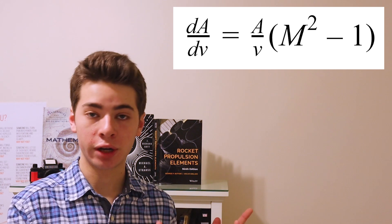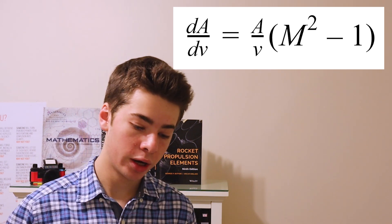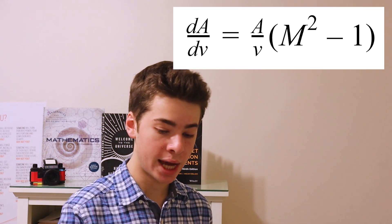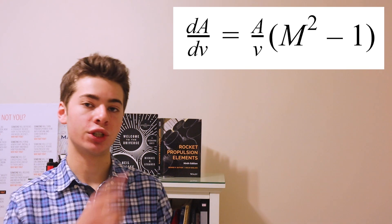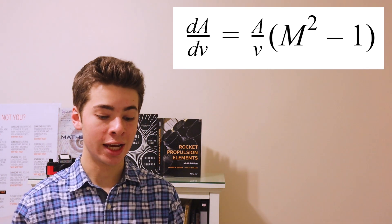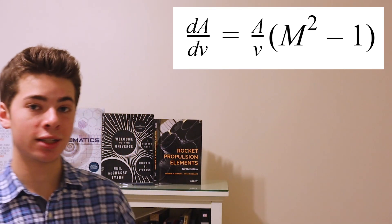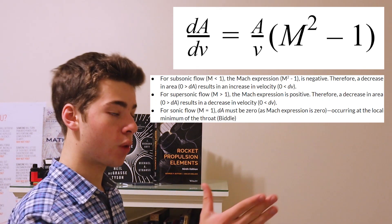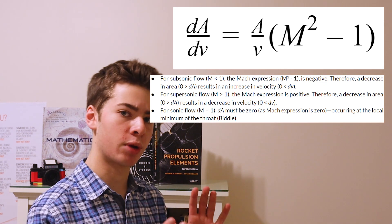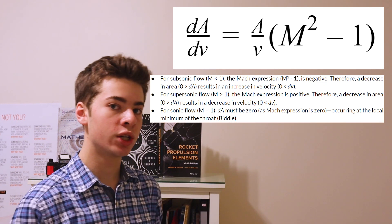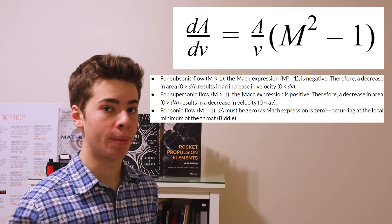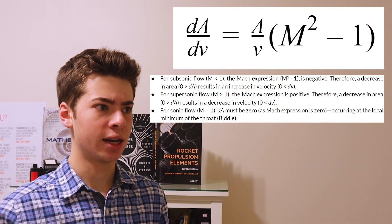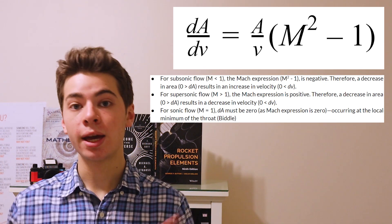For subsonic flow, also known as Mach number smaller than 1, the Mach expression — the term with M squared minus 1 — becomes negative. Therefore, a decrease in area, shown by negative dA, results in an increase in velocity. The reason is that the left-hand side of the equation becomes negative from dA being negative, and the right-hand side becomes negative from the Mach expression being negative. Hence, the only way to balance the equation is for dV to remain positive. It must also be noted that A and V always remain positive, as area cannot be negative and velocity is always traveling in one forward direction.